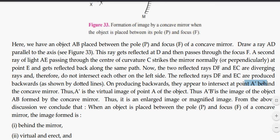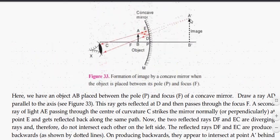They meet at point A dash. A dash is the virtual image of point A of the object. Thus A dash B dash is the image of the object AB formed by concave mirror.